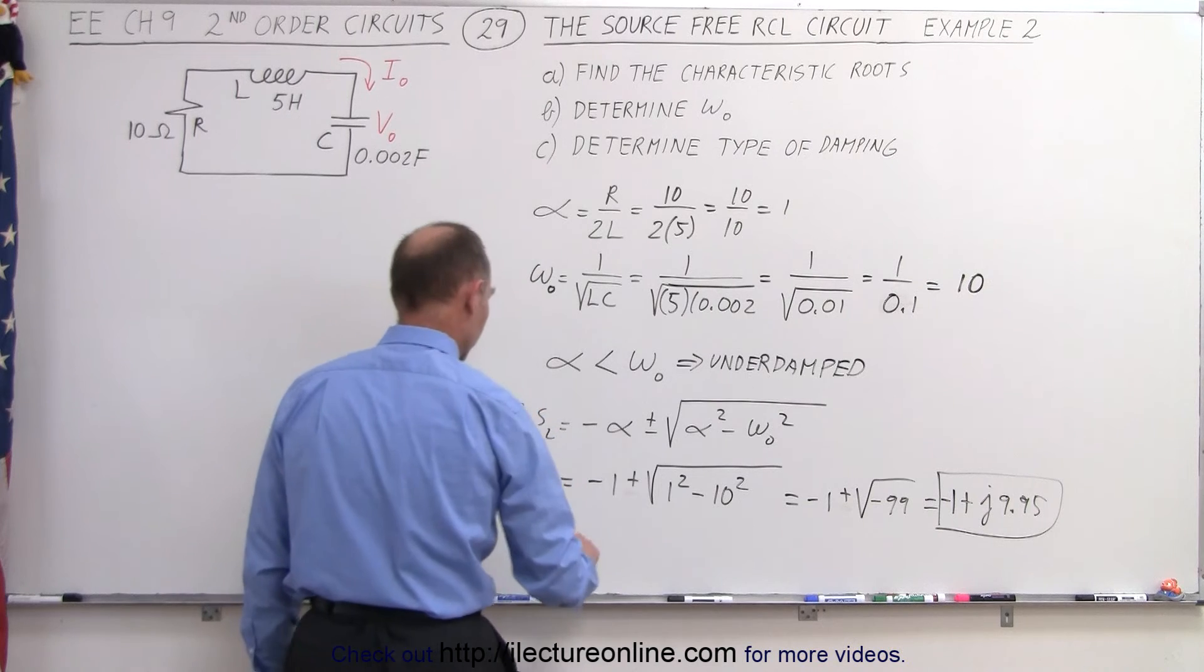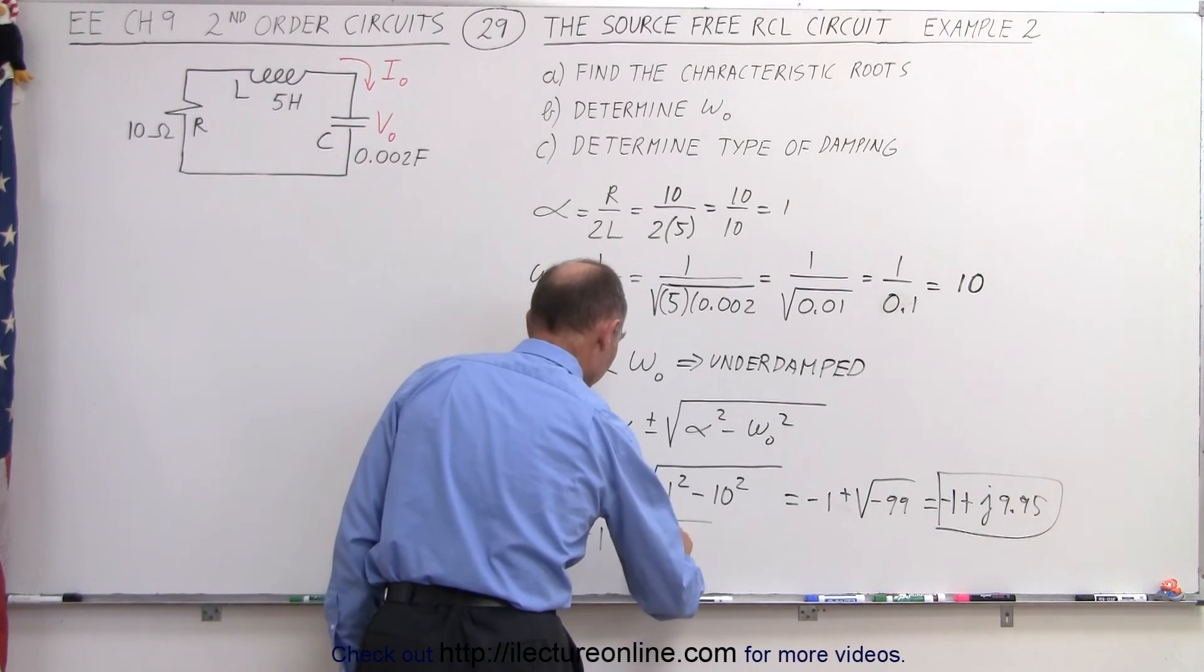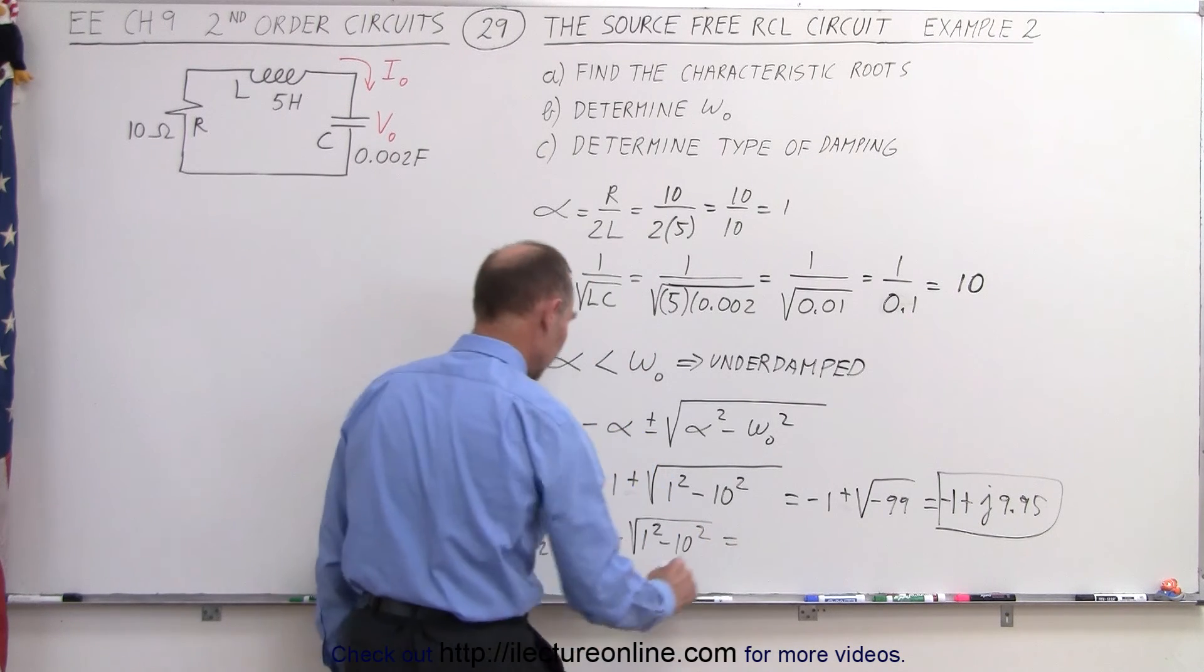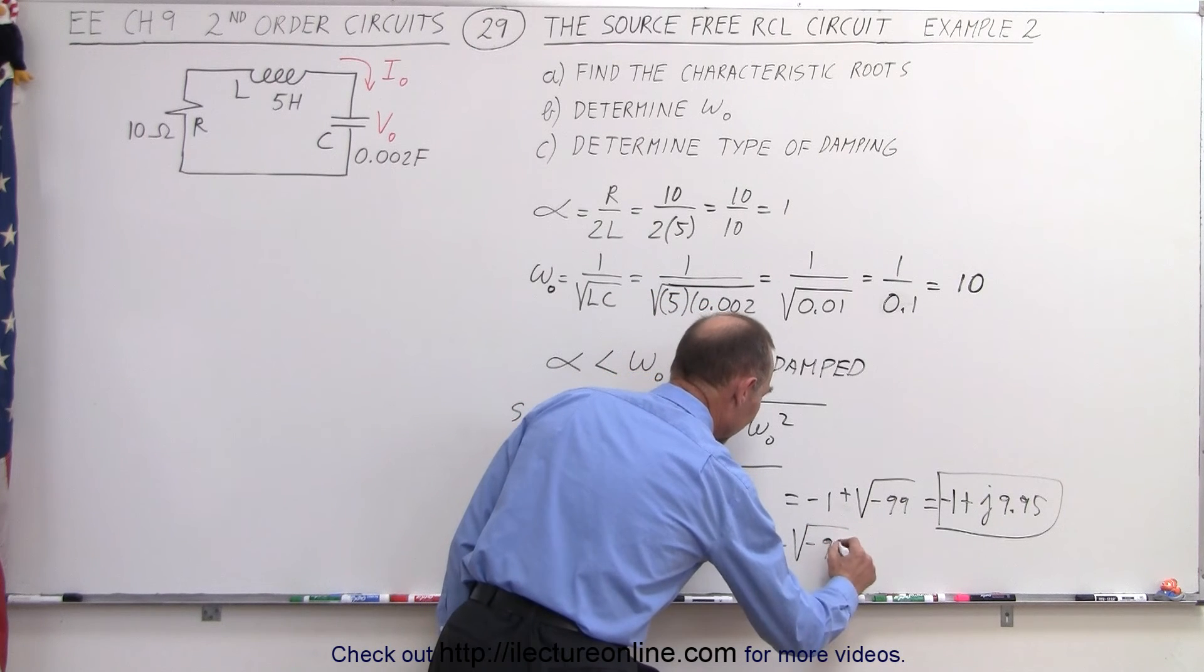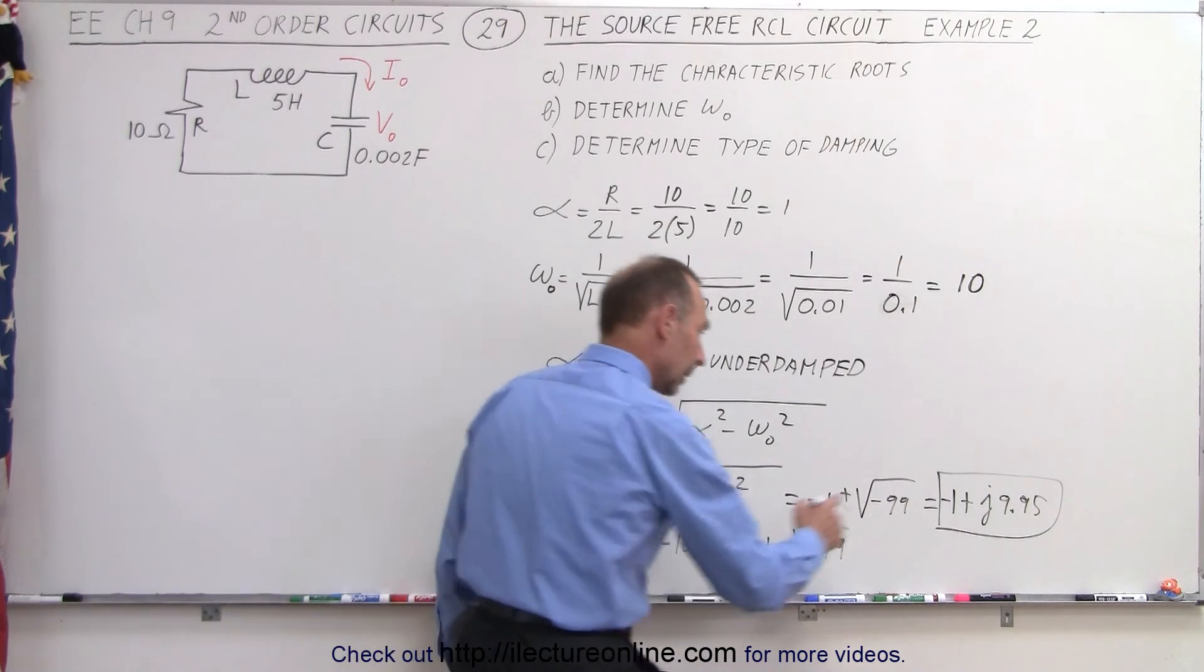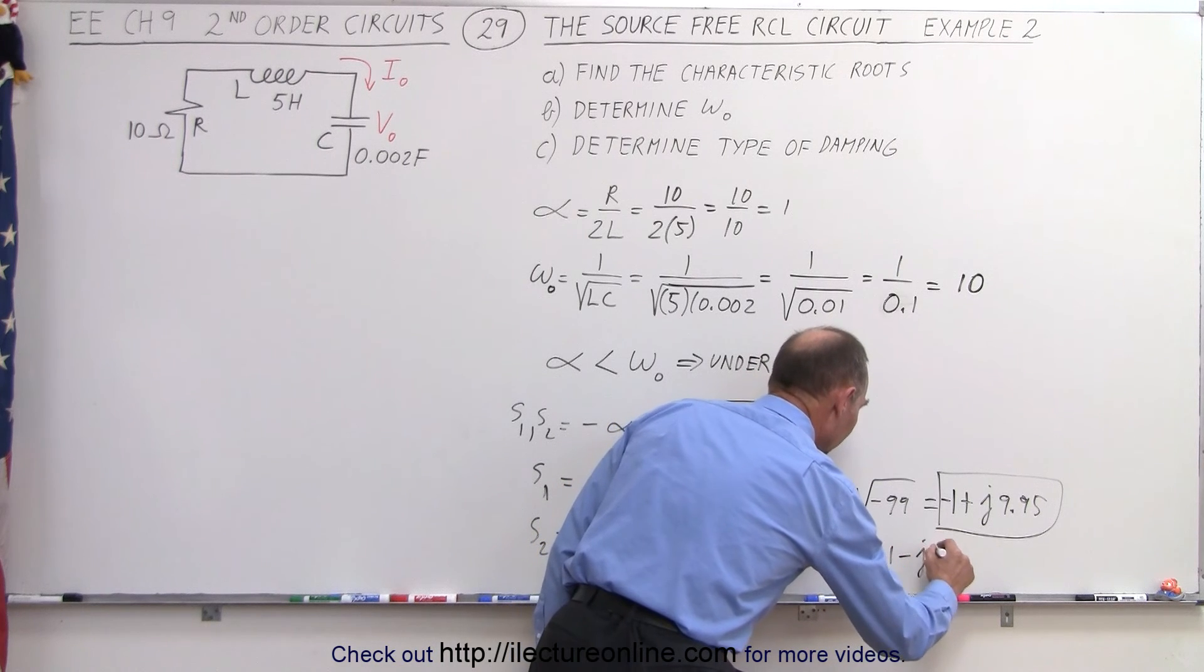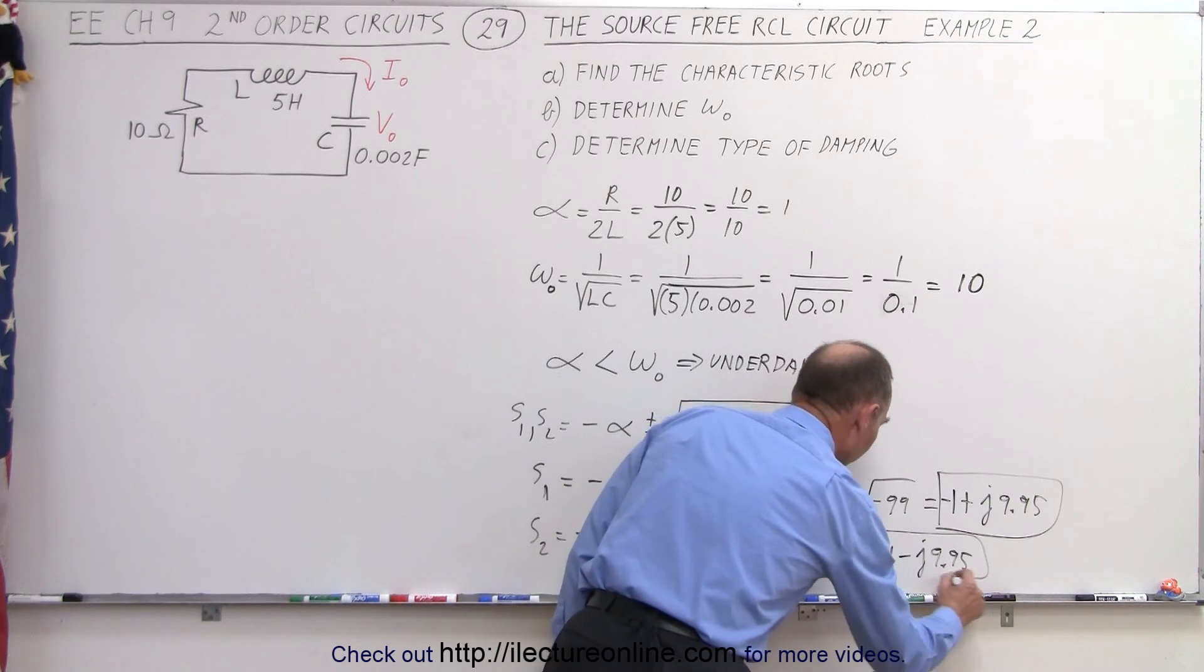And then we find S2, which is equal to minus 1 minus the square root of 1 squared minus 10 squared. That would be equal to minus 1 minus the square root of negative 99. Of course, a negative underneath the radical will give us a complex number, so this is equal to minus 1 minus J9.95, and that would be the other characteristic root.